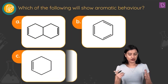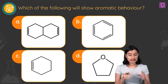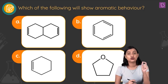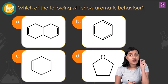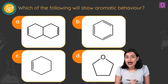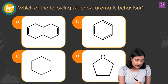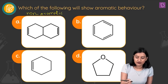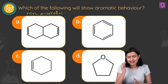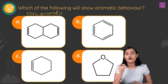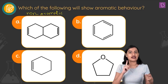Option A lacks conjugation, so due to the lack of conjugation this molecule does not qualify — it is non-aromatic. Option B is benzene. Benzene is planar, has conjugation, and has 6 pi electrons in the ring, satisfying 4n+2 where n=1. So benzene is aromatic and definitely correct.